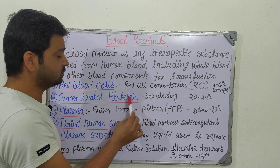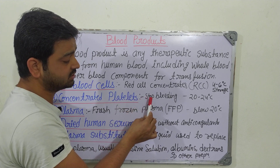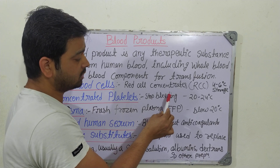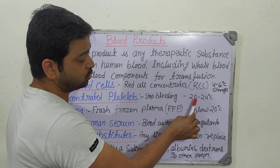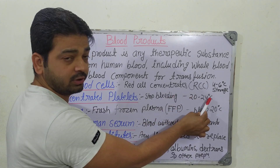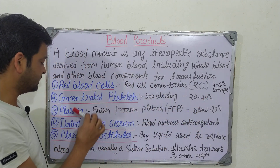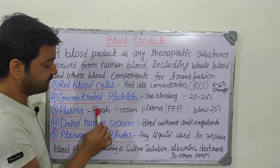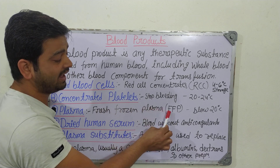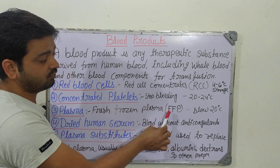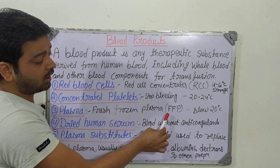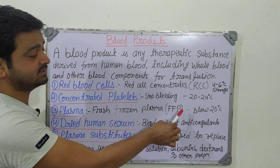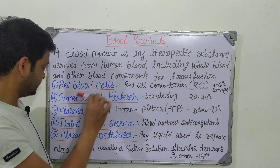The second product is concentrated platelets. As we know, platelets function to stop bleeding. Concentrated platelets have to be stored at 20 to 24 degrees centigrade. The third one is plasma, which is very important — Fresh Frozen Plasma, that is FFP. It can be stored below 20 degrees centigrade — that is the requirement.